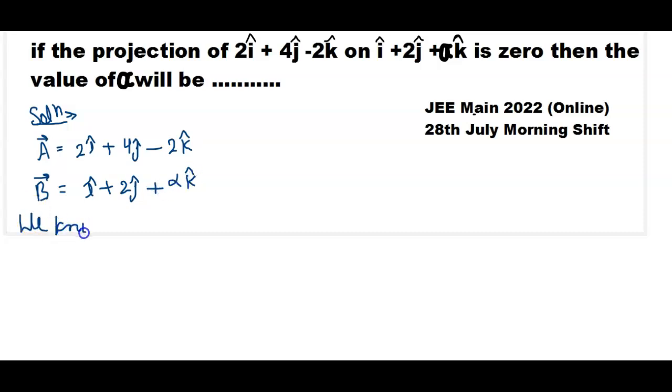We know that projection of vector A on vector B is equal to 0.